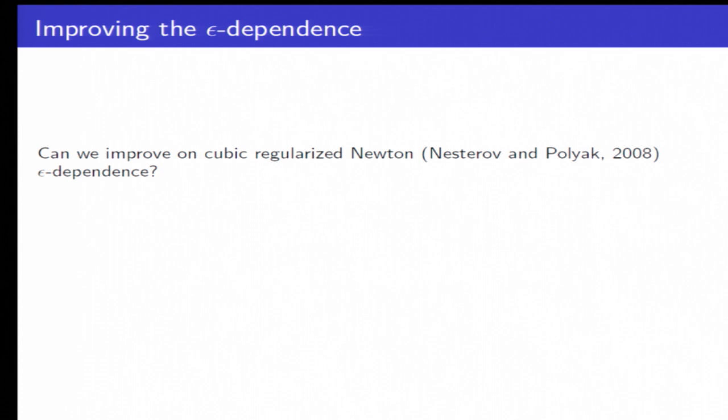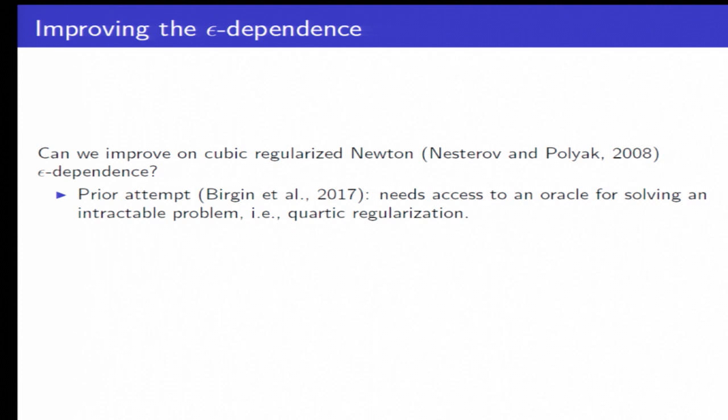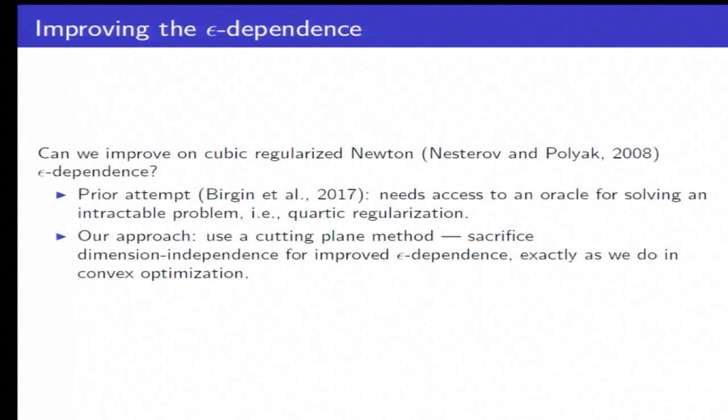Okay. So the question we're asking is whether or not you can improve on cubic regularized Newton's epsilon dependence. So prior attempts to do this needed access to an oracle for an essentially intractable problem, which is quartic regularization. So our approach is to use a cutting plane method. And like I say, we sacrifice dimension independence for improved epsilon dependence exactly as one does in convex optimization.